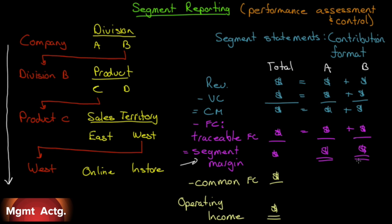Once we subtract traceable fixed costs, we get a new term: the segment margin. That's as far as we can go with the segment statements. From that, we have some common fixed costs — fixed costs of the company as a whole that are not traceable to either segment A or segment B. If segment A or segment B disappeared, this fixed cost wouldn't disappear. For example, we can think of the CEO's salary as a common fixed cost, whereas Division A's manager's salary and Division B's manager's salary would be traceable. From our segment margin, we subtract our common fixed costs to get to operating income.